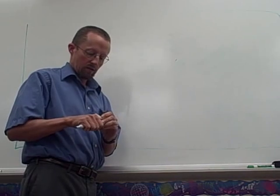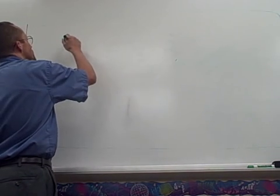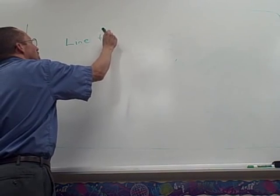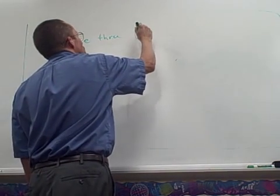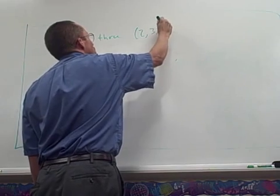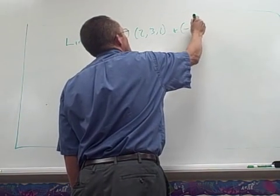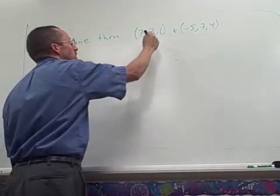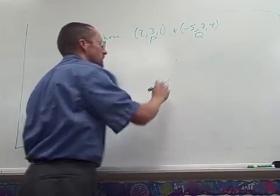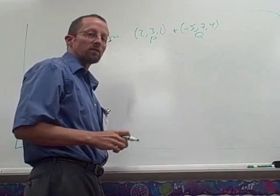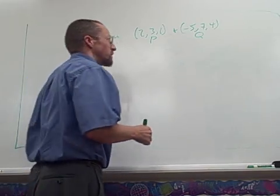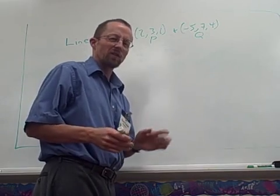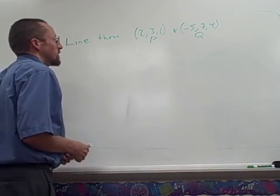A little bit about lines and planes. So for example, we'd like to describe the line through two points, 2, 3, 1, and -5, 7, 4. Let's call that P and Q. And we'd like to do that using vectors and then also see what it is explicitly in coordinates and then talk about what's called the symmetric equations of a line, which is a bit different from what we'd seen in the linear algebra case.